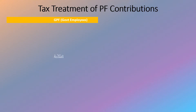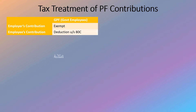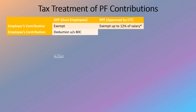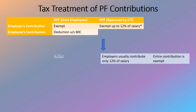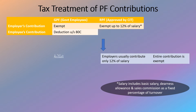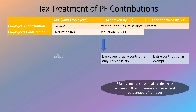Now let's go through the tax treatment of PF contributions. In respect of GPF for government employees, the employer's contribution is fully exempt. Employees can avail deduction under Section 80C for their own contribution. With respect to RPF, the employer's contribution is exempt up to 12% of salary. Employers usually contribute only 12%, so practically the entire contribution is exempt. Salary here includes basic salary, DA allowance, and sales commission as a fixed percentage of turnover. Employees can also avail deduction under Section 80C for their RPF contribution. With respect to UPF, the employer's contribution is exempt, but employees will not be able to avail any deduction.